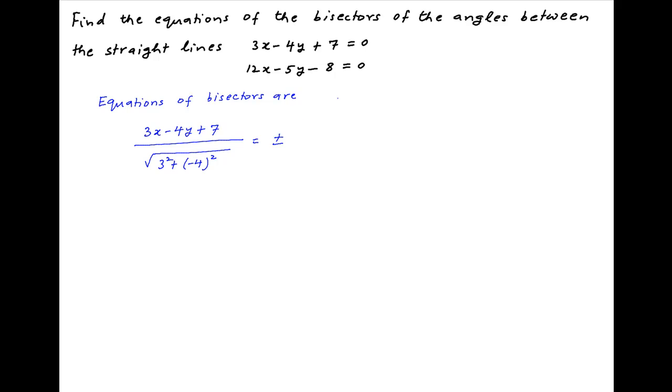This equals plus or minus 12x minus 5y minus 8 divided by the square root of the sum of the squares of the coefficients of x and y in the second equation.